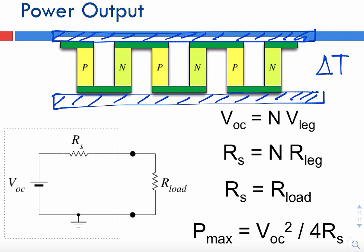There are a few things we need to consider. Just like any voltage generator, this generator will have an internal resistance. We can refer to that as the parasitic resistance or the source resistance, shown here as R sub S. This is not a great thing to have because it's going to affect the performance of this device.